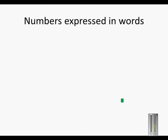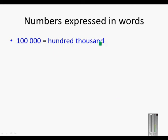Numbers expressed in words. This number is hundred thousand. Thousand has three zeros and hundred has two, so if we put them together, we get hundred thousand.